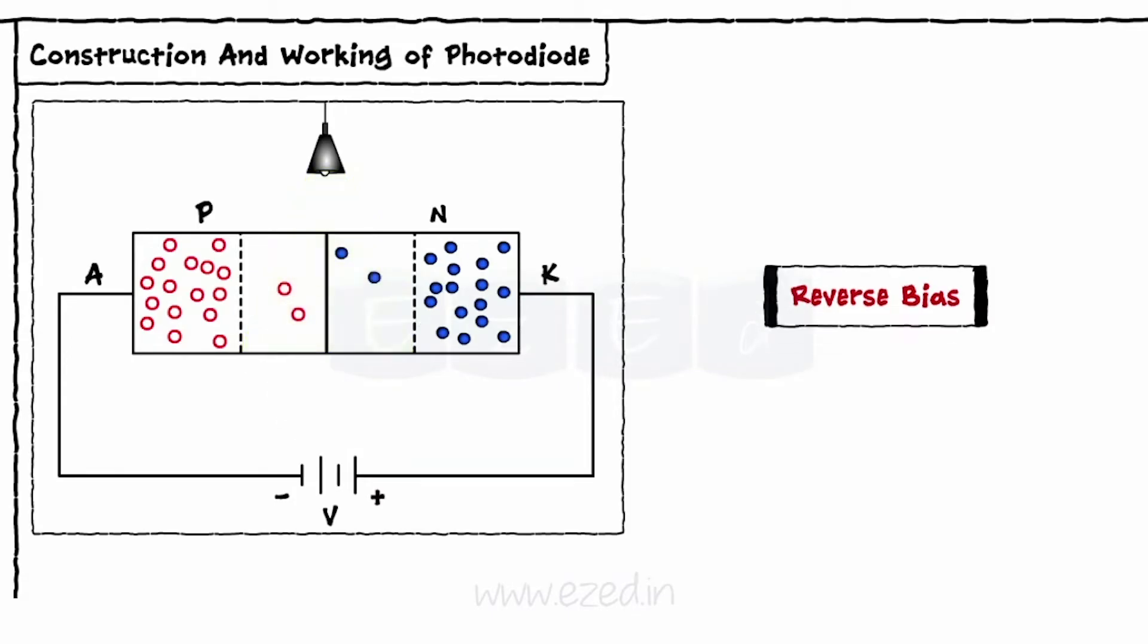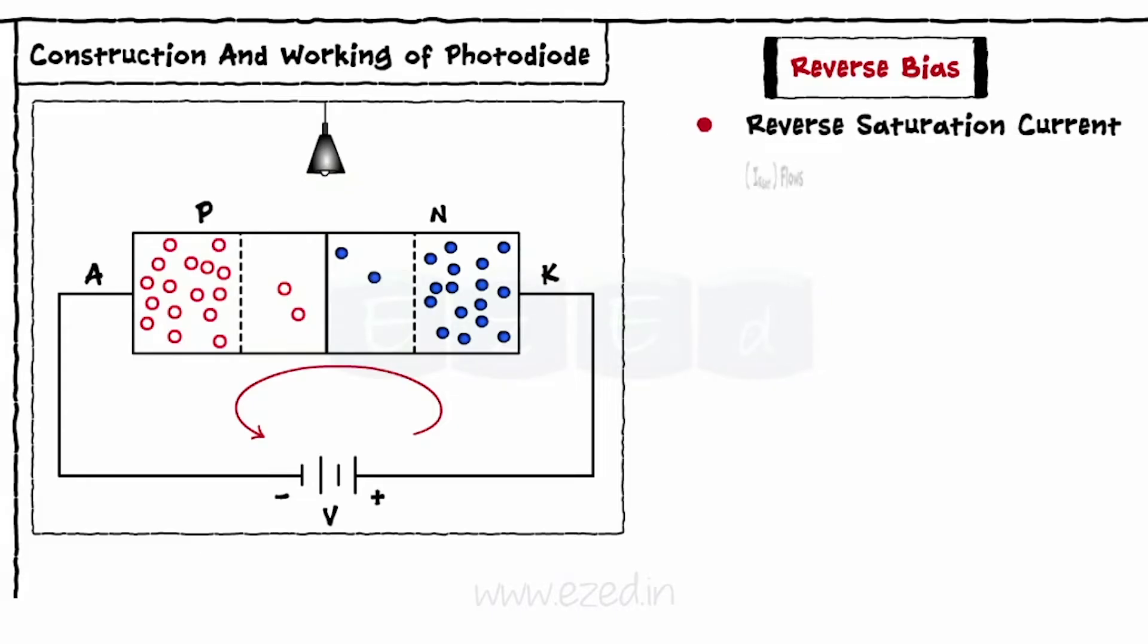We know that in a reverse bias mode, reverse saturation current flows through a diode. Thus, increase in the charge carriers leads to increase in the reverse saturation current.